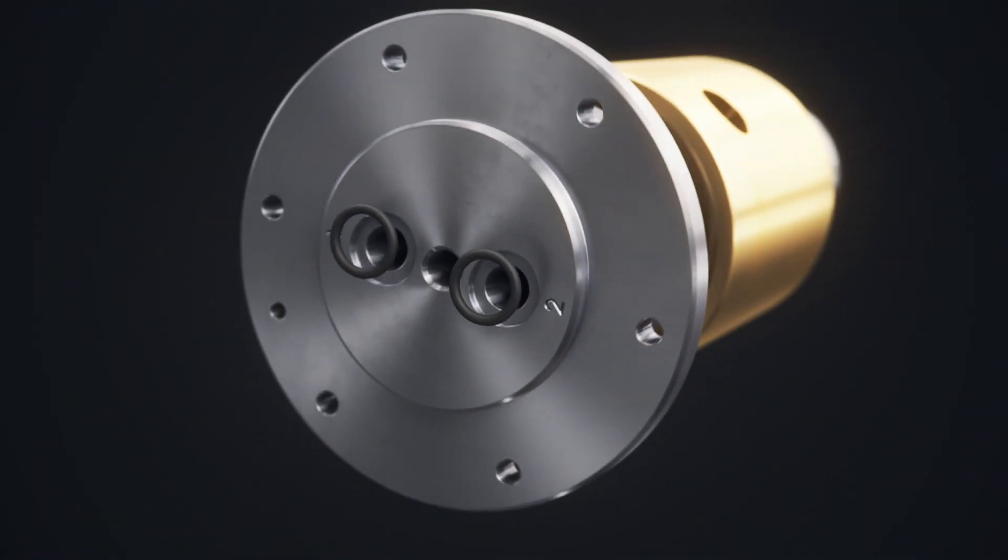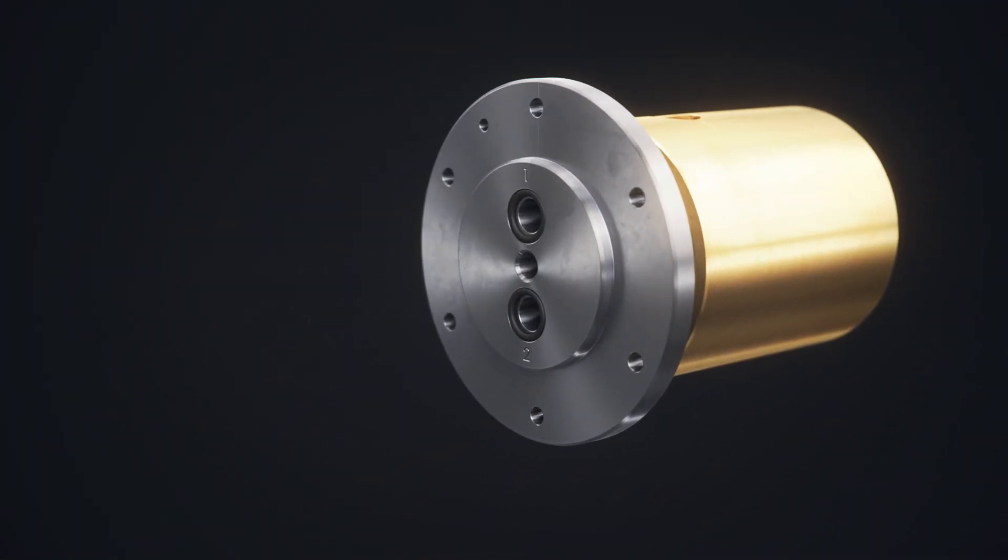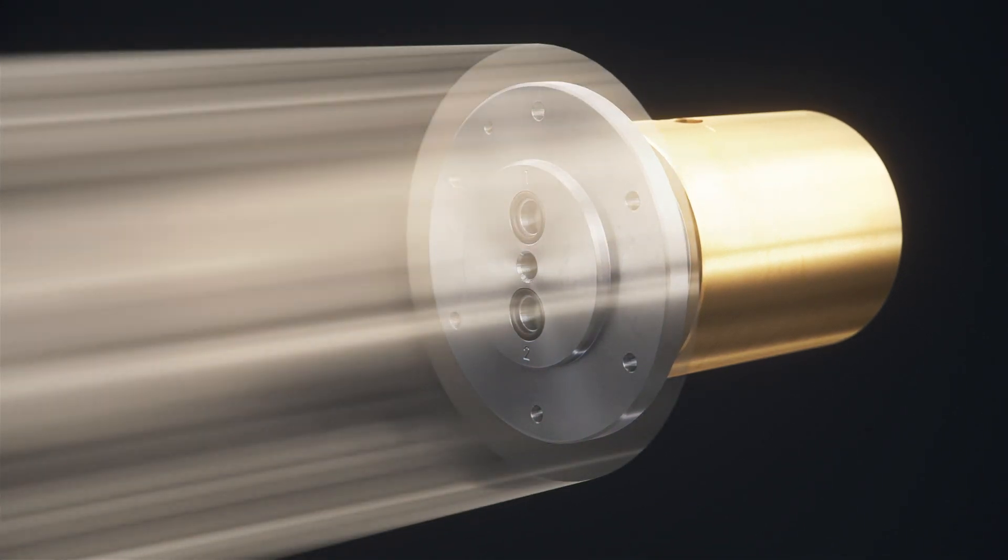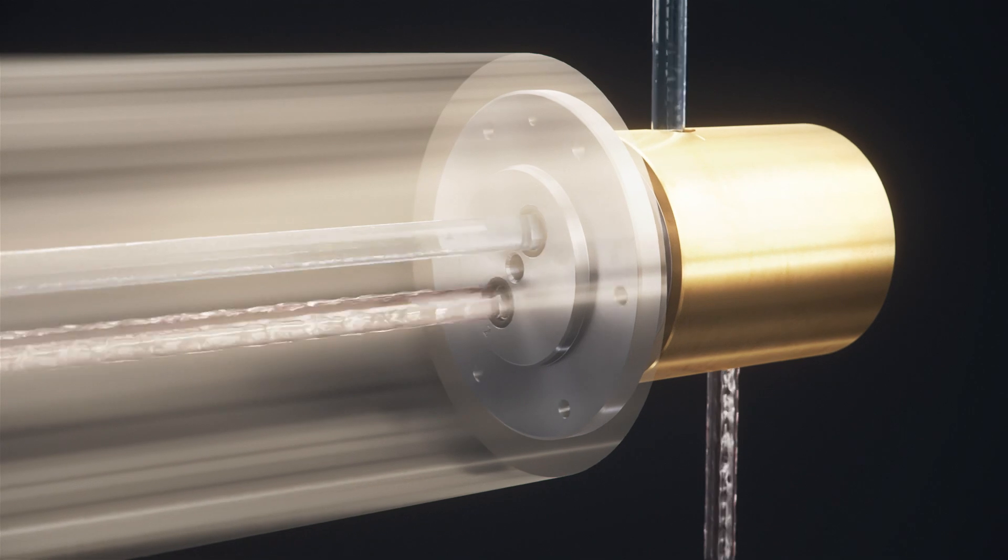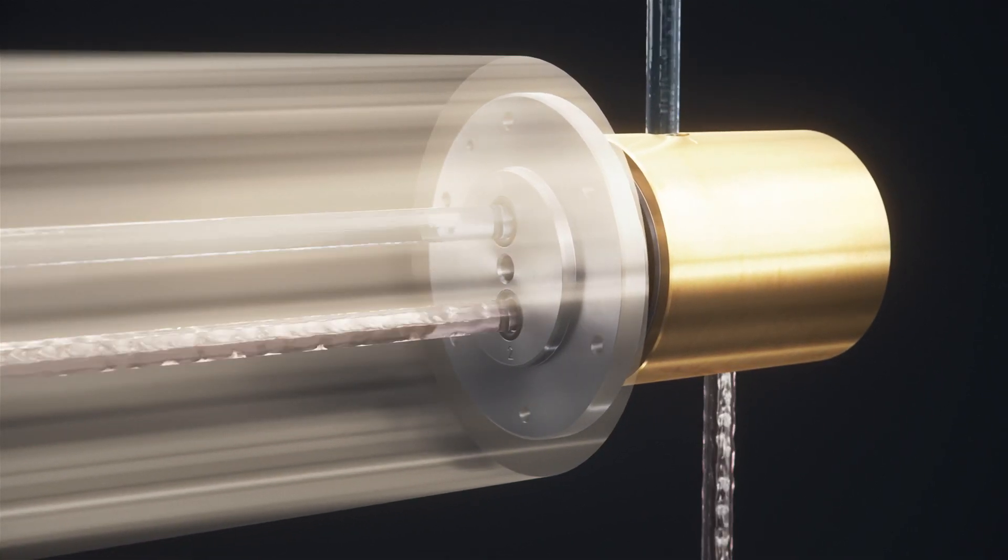Multipass rotary unions are used to transfer media into and out of rotating equipment. Media is most commonly transferred into the stationary end of the union and out the rotating end. It is used in the application and then returned to the union.